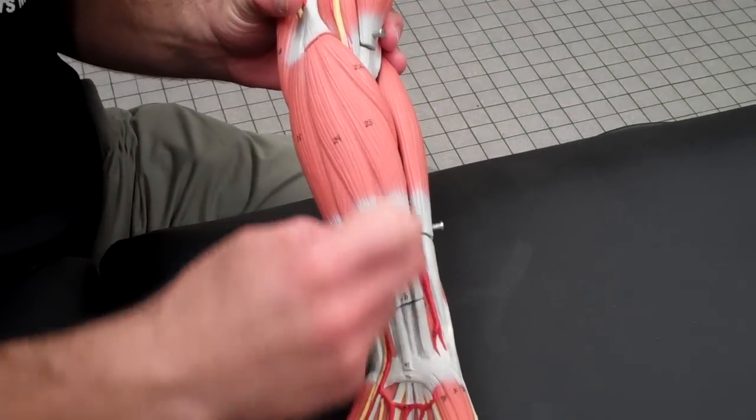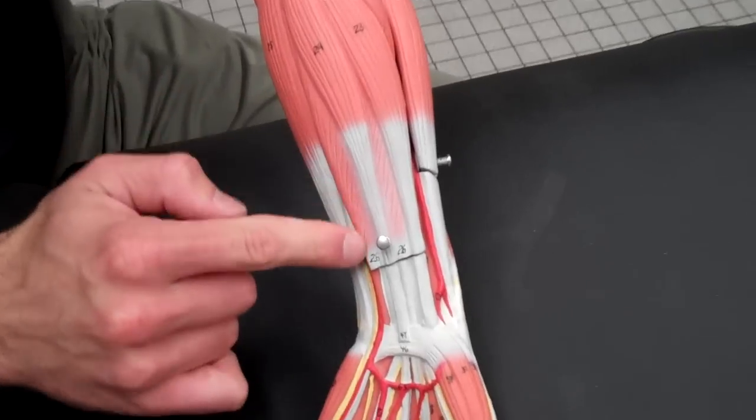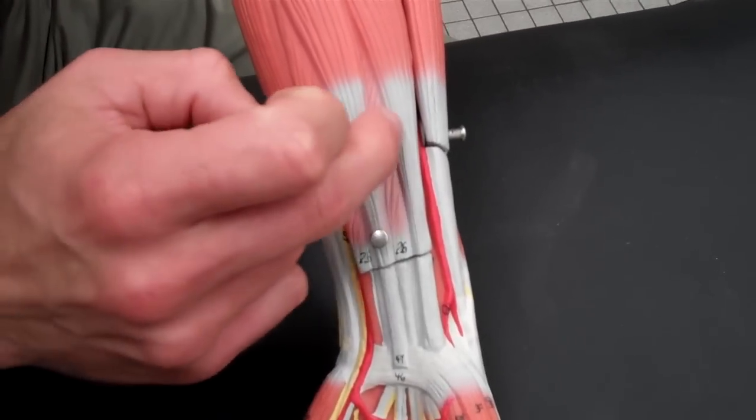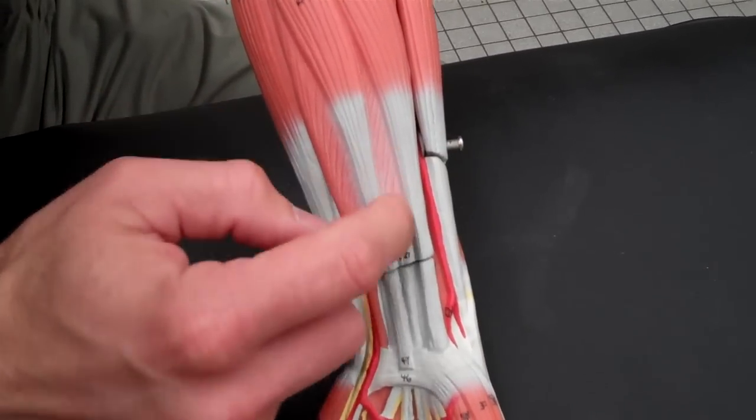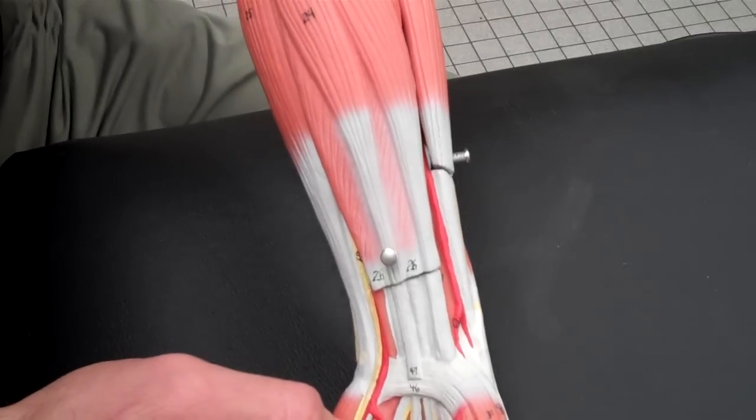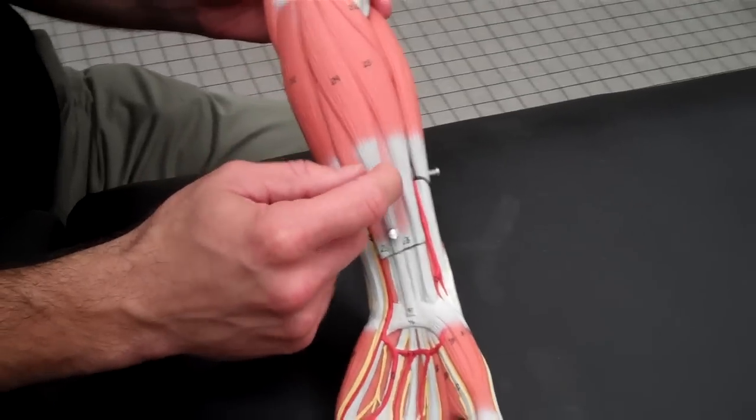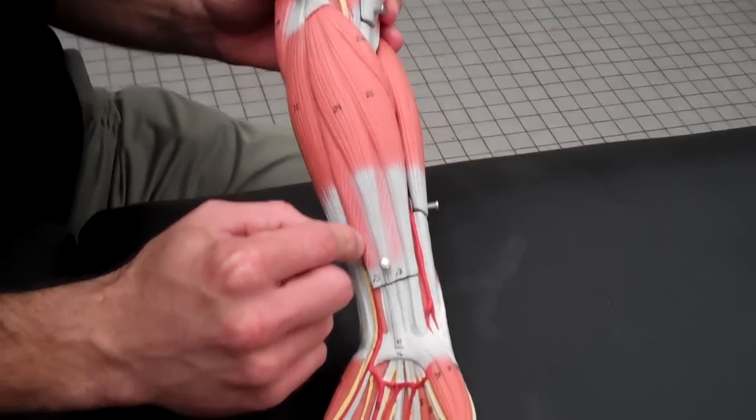This muscle right here between these two, so it's between the palmaris longus on both sides right there, that muscle is your flexor digitorum profundus—I'm sorry, flexor digitorum superficialis.